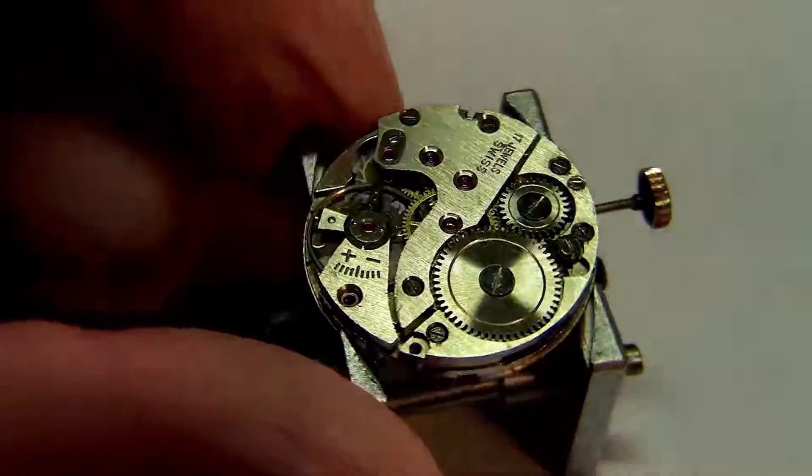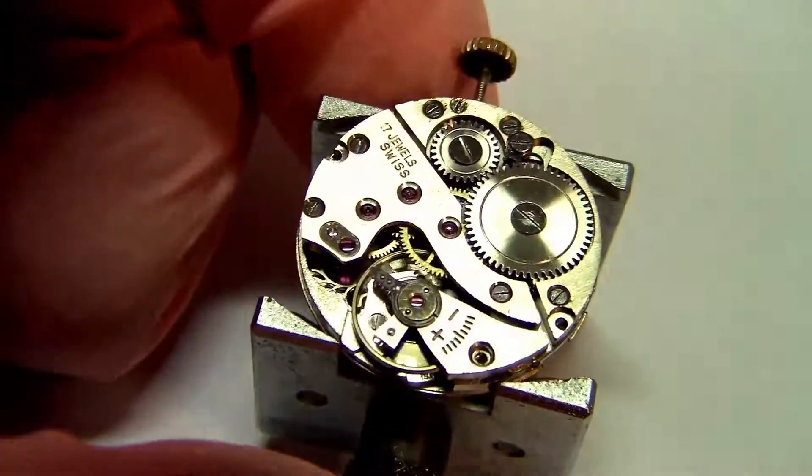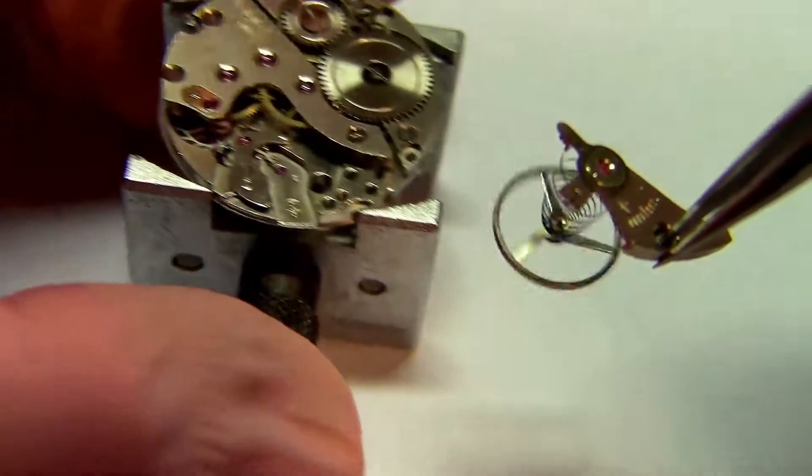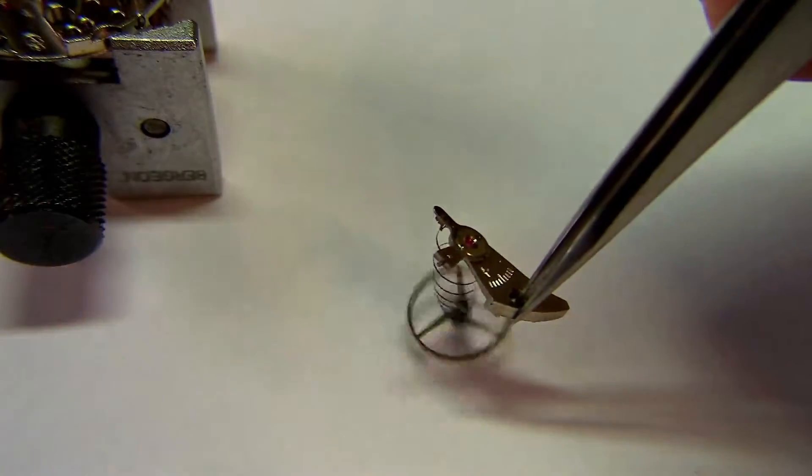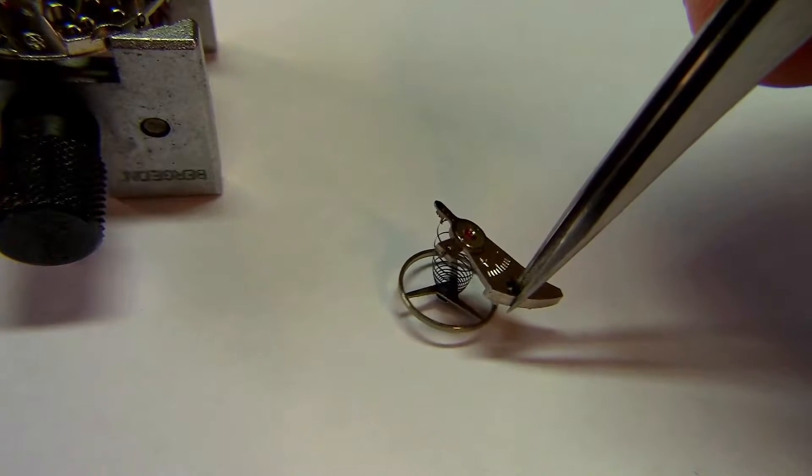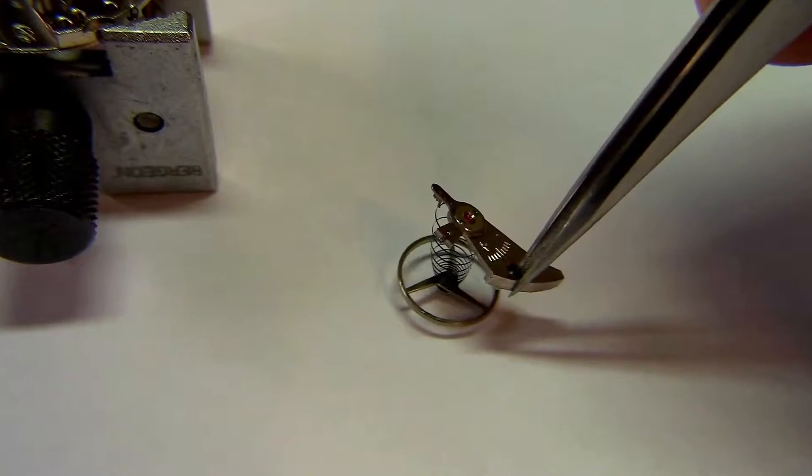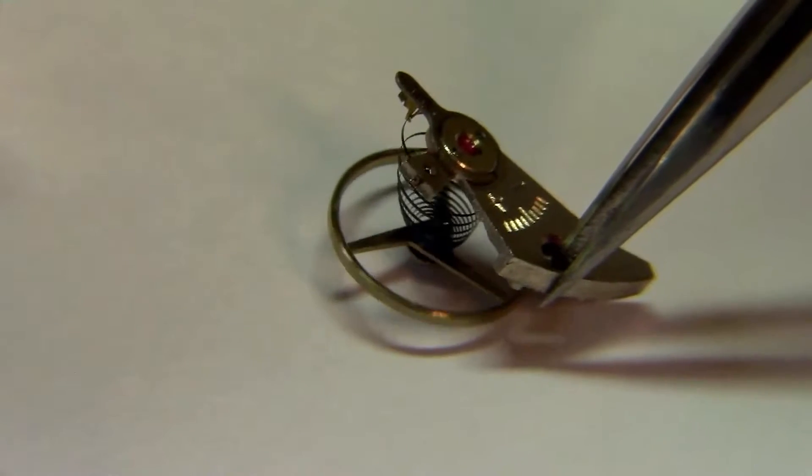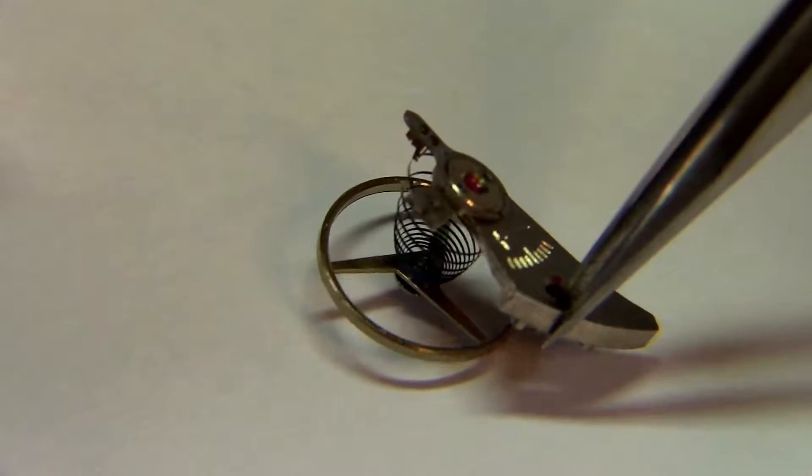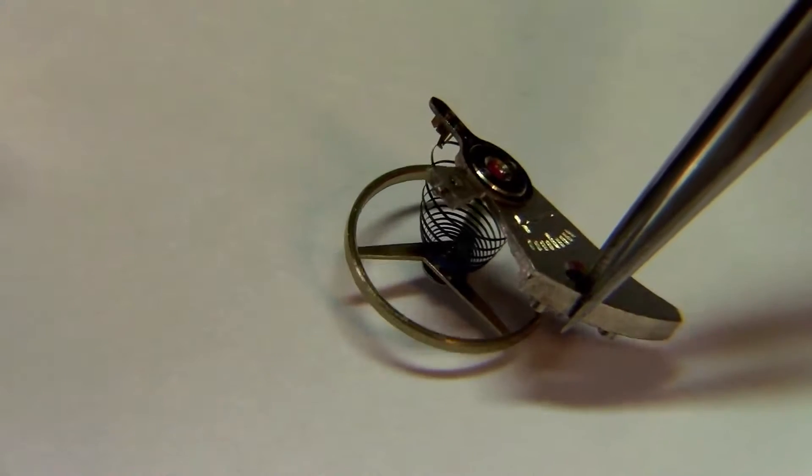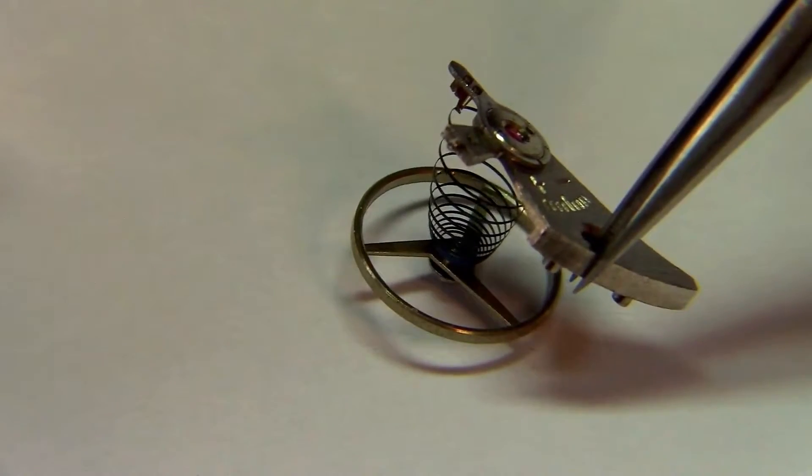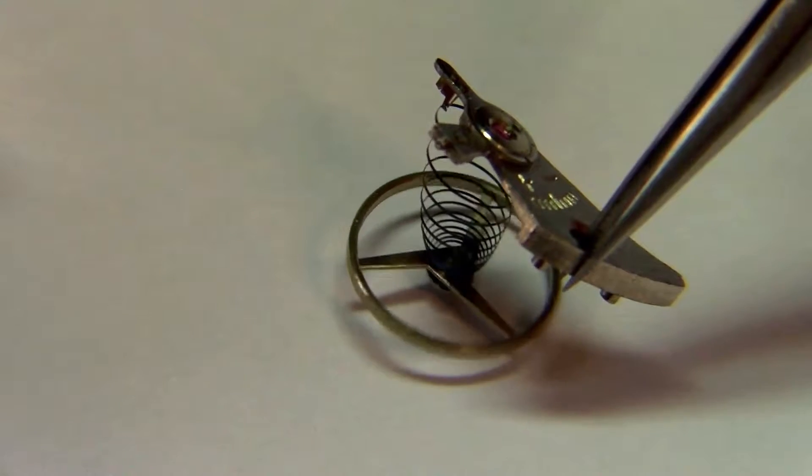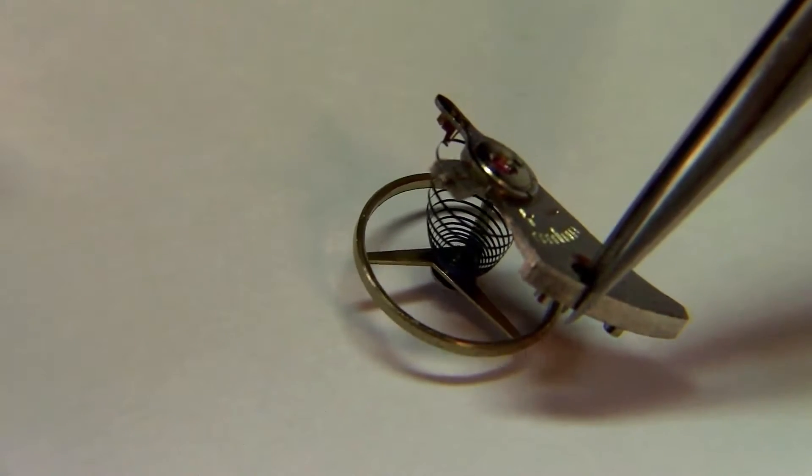Here I'm going to remove the balance wheel. And this spiral-shaped spring is the hairspring, that is the spring that is responsible to make this oscillatory movement of the balance wheel. So the balance wheel actually works like a pendulum, but instead of using the gravity to make its oscillatory movement and its back and forth movement, it uses the energy from this small spring.